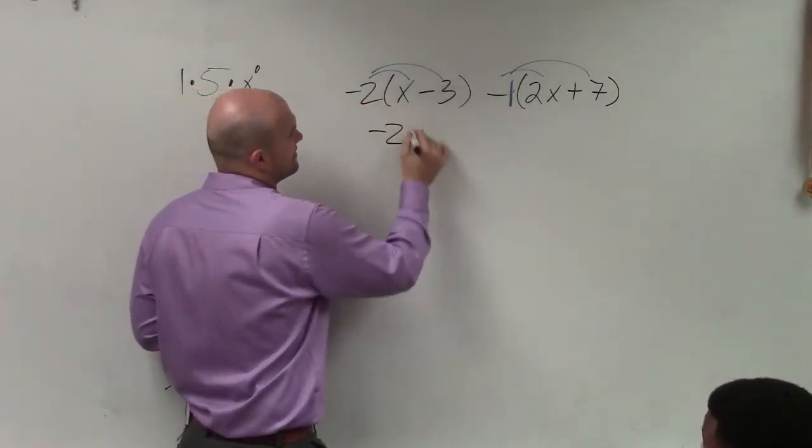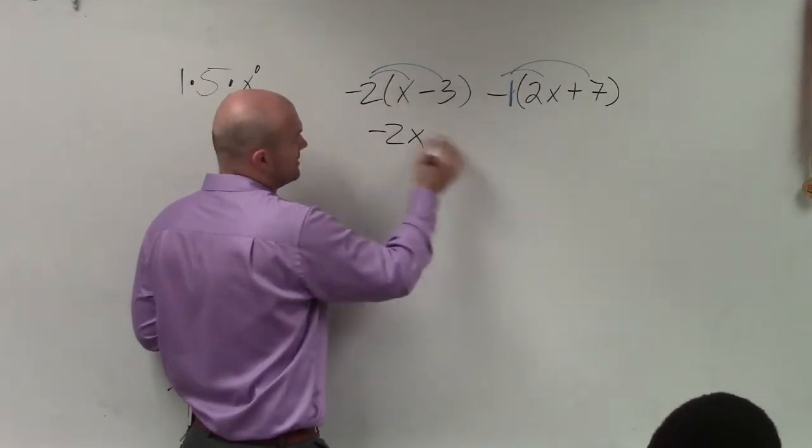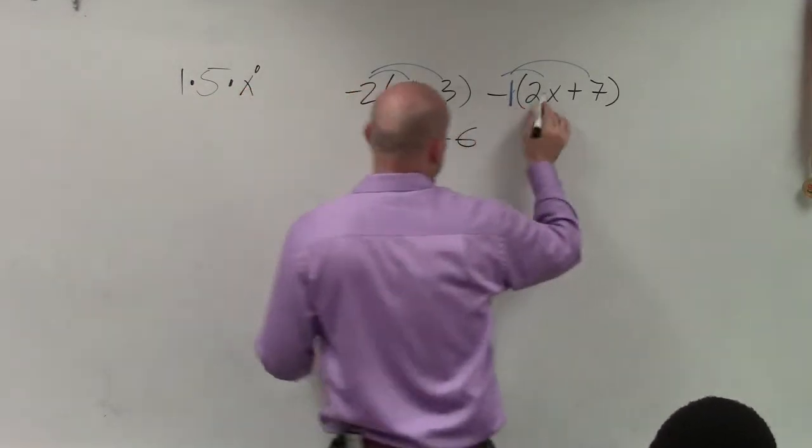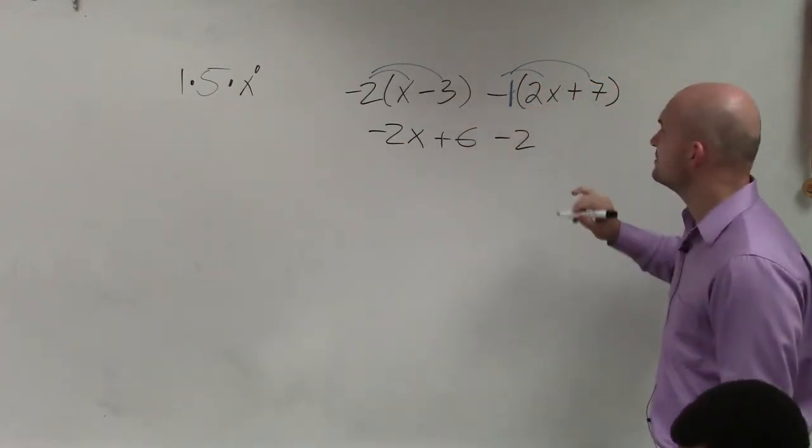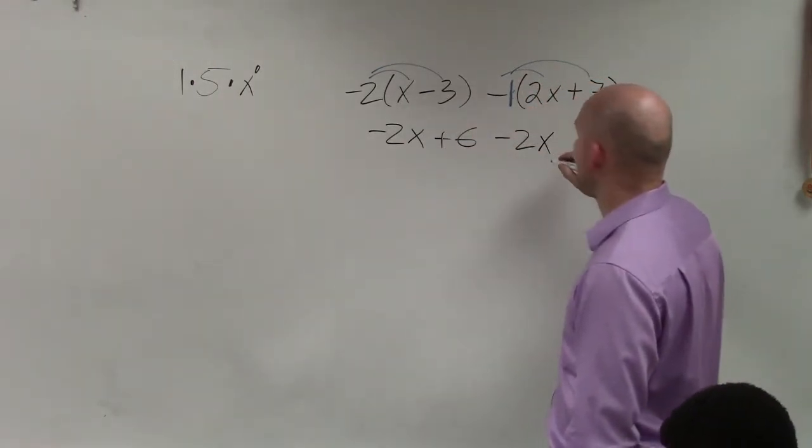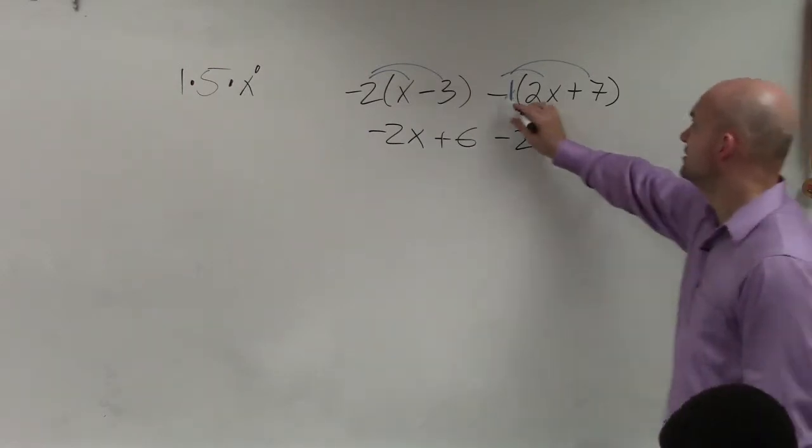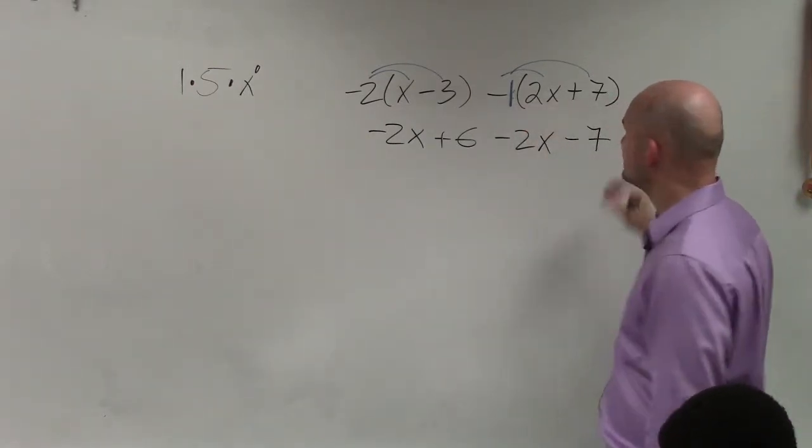When doing that, negative 2 times x is negative 2x. Negative 2 times 3 is going to give me a negative 6. Negative 1 times 2x is negative 2x. Negative 1 times 7 is a negative 7.